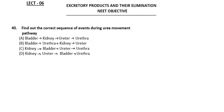Next question: find the correct sequence of events during urea movement pathway. Urea is filtered in the renal corpuscle, and from each kidney the urea collected goes through the renal pelvis.